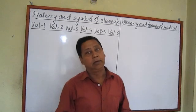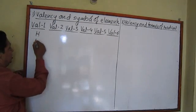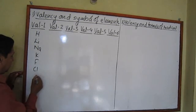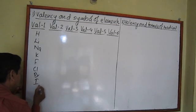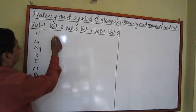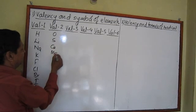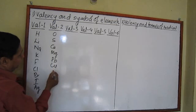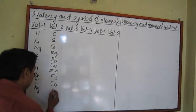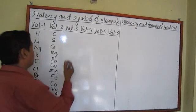Valency one: elements like hydrogen, lithium, sodium, potassium, fluorine, chlorine, bromine, iodine, and silver all have valency one. Valency two: oxygen and sulfur are non-metals with valency two. Metals with valency two include calcium, magnesium, lead, copper, zinc, iron, cobalt, and mercury.